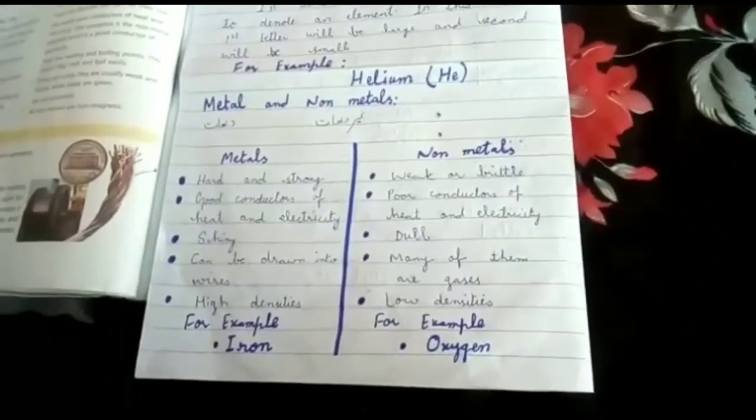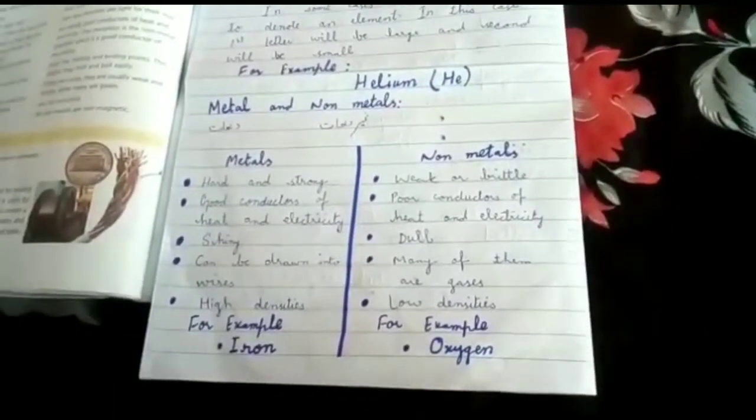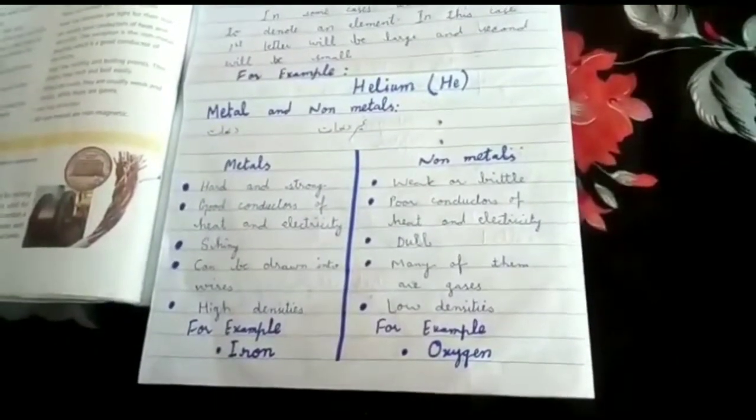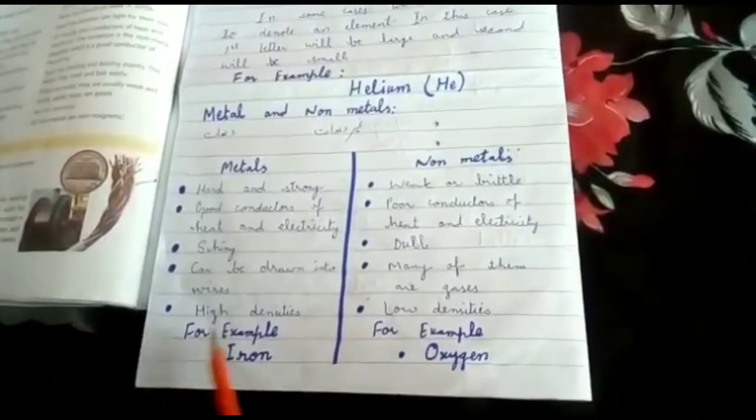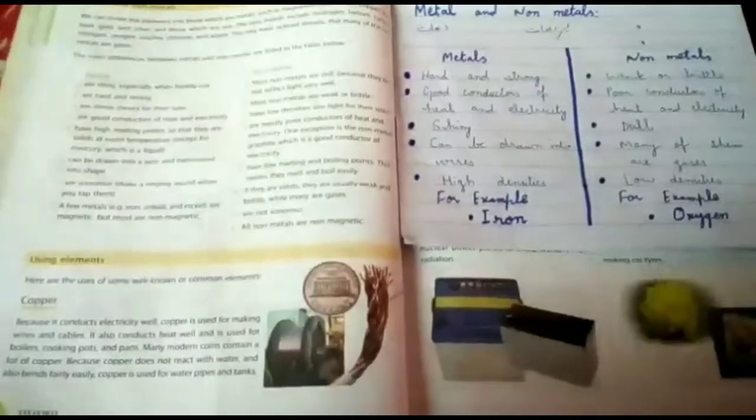The shine can affect the welders' eyes, therefore they use black goggles. I mean to say that metals are shining when they are freshly cut.